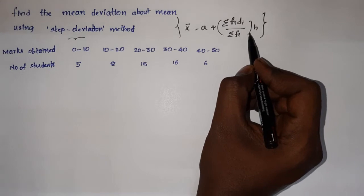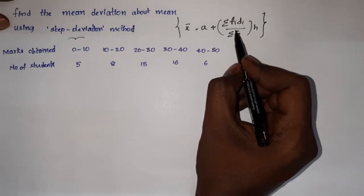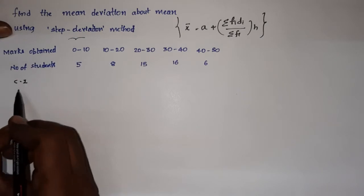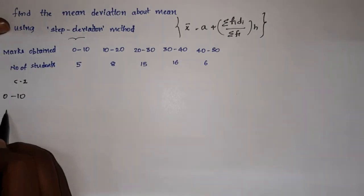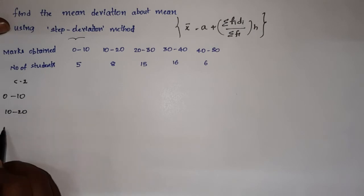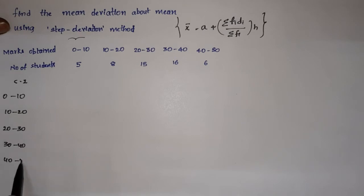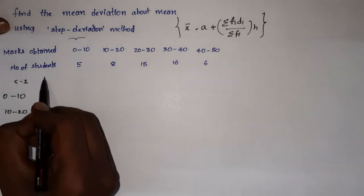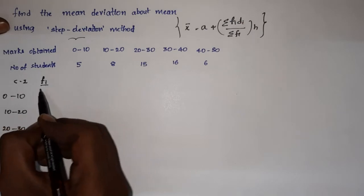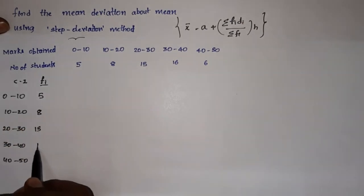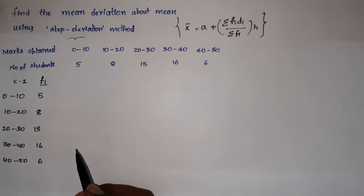The class interval is the difference between the upper limit and lower limit. The class intervals are: 0 to 10, 10 to 20, 20 to 30, 30 to 40, 40 to 50. The corresponding frequencies are: 5, 8, 15, 16, 6.